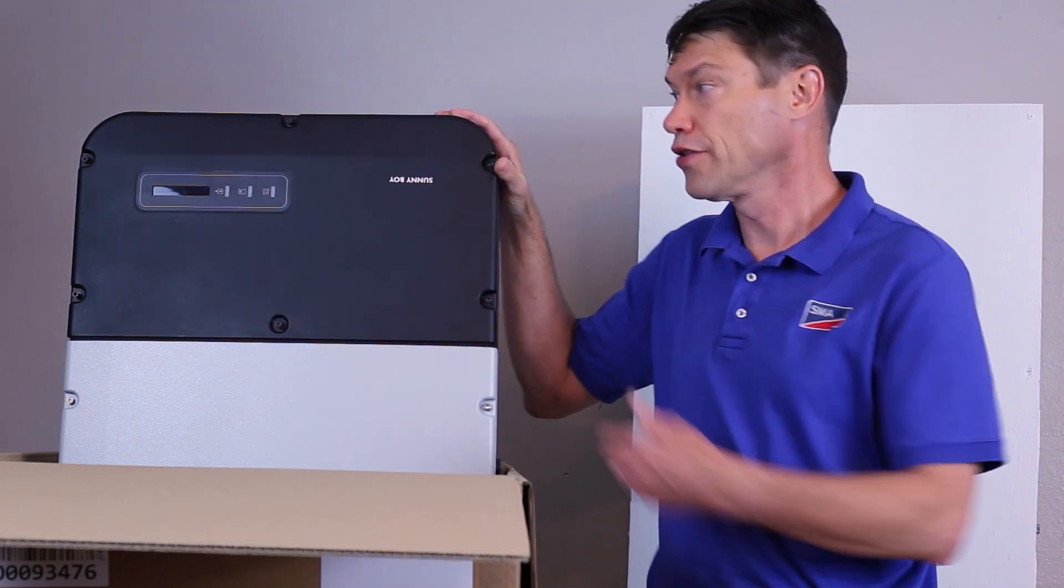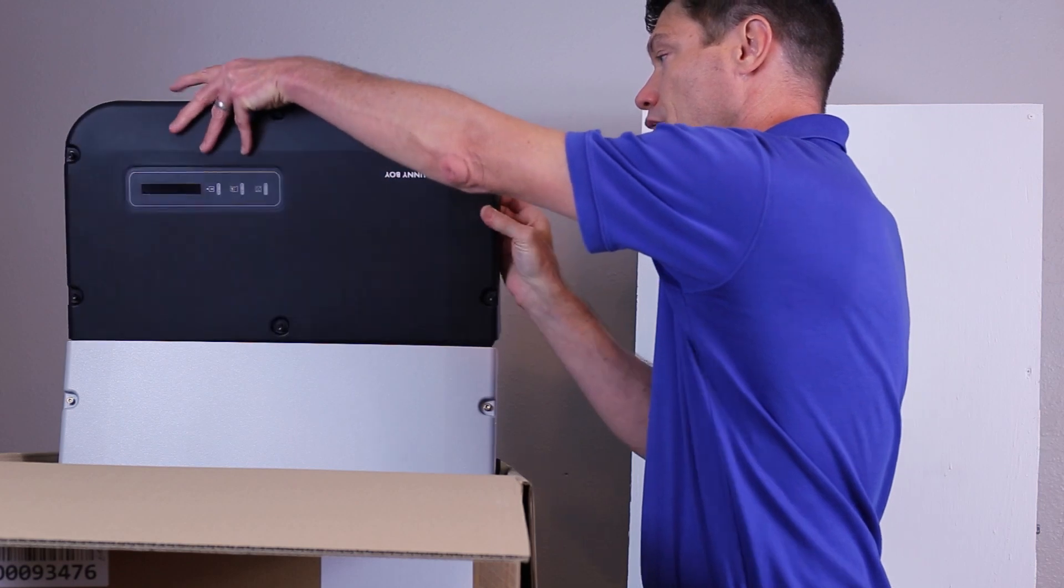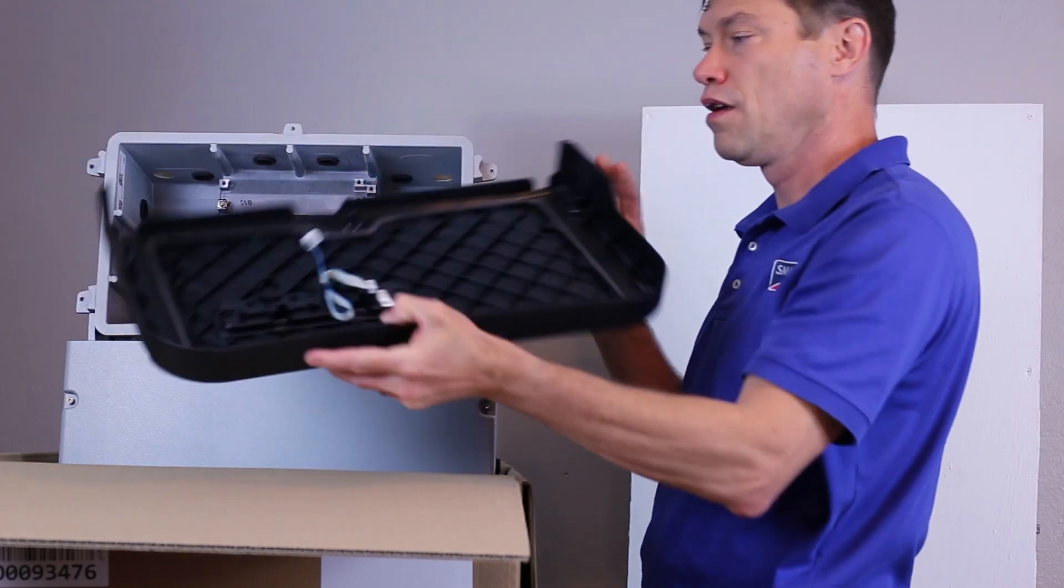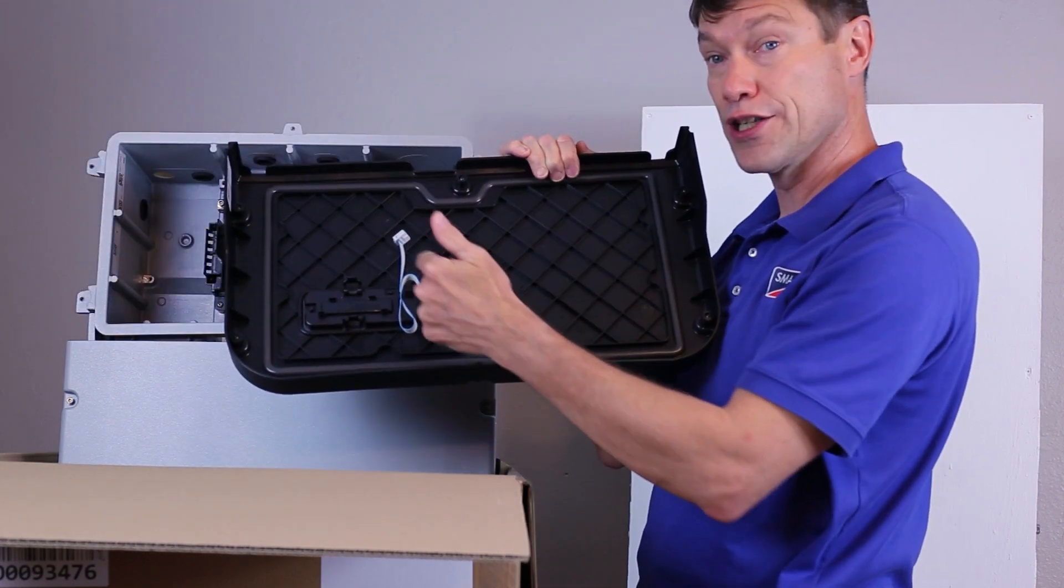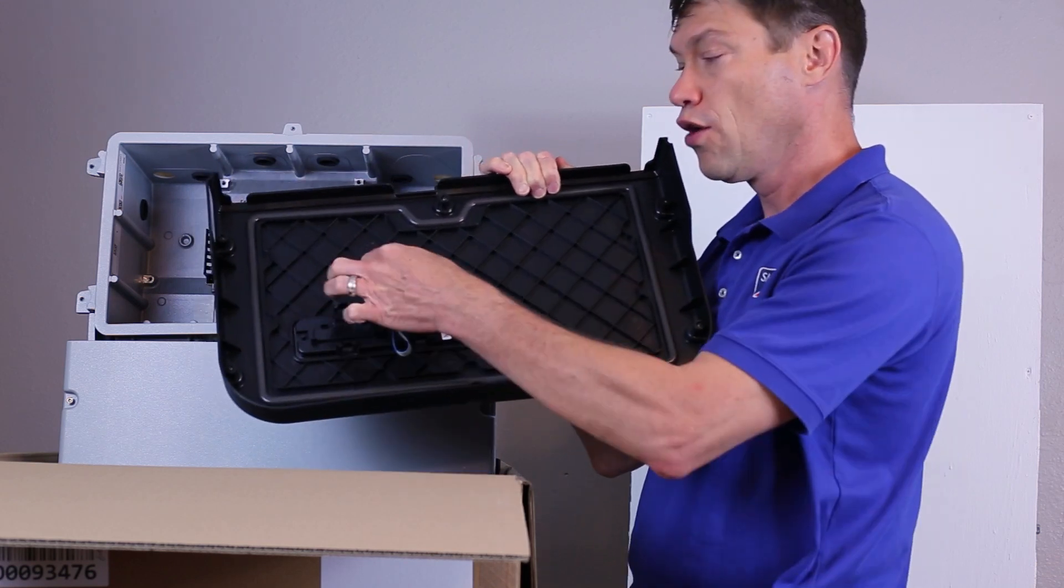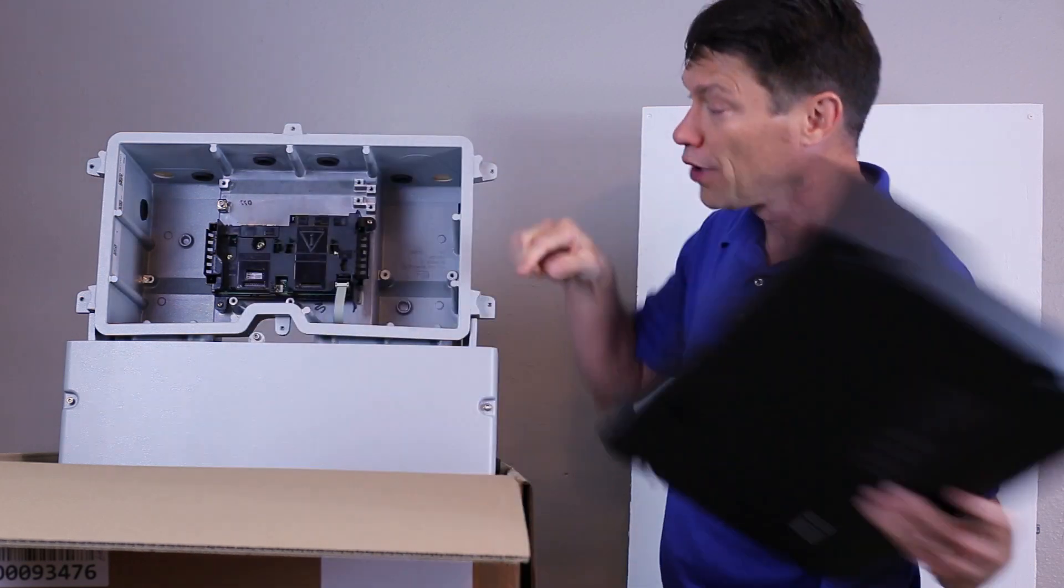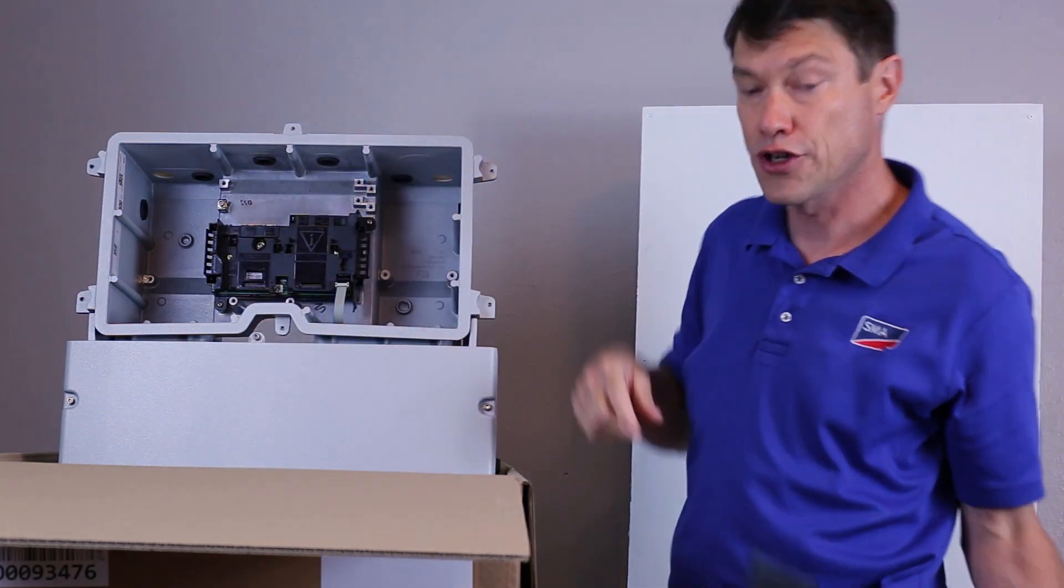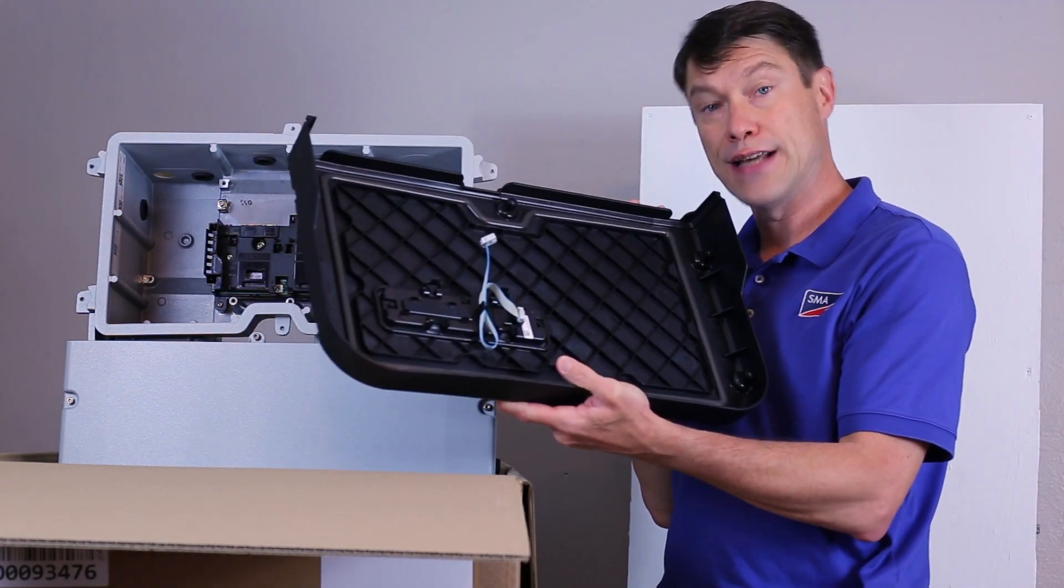When all six of the screws have been loosened, remove the connection unit lid. Note that the ribbon cable for the display board is not installed upon shipment. When we replace the connection unit lid, we'll have to make sure this end of the ribbon cable plugs into the display port on the communications board. For now, just set this lid aside in a safe place.